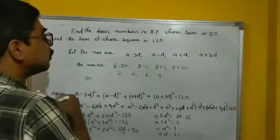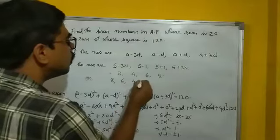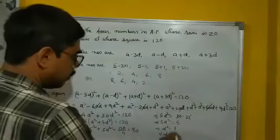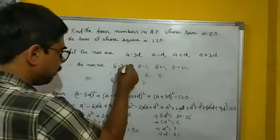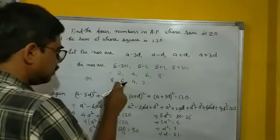Or in a reverse order also it may be possible. So it is 8, 6, 4, 2, if we take the minus 1. Because I took the 1 only here. If we take minus 1, then it will be reverse, 8, 6, 4, 2, like that.